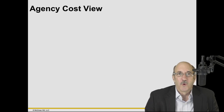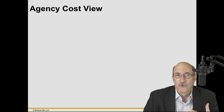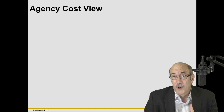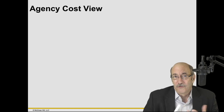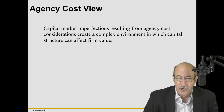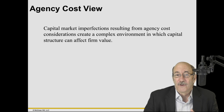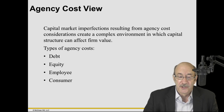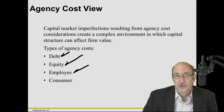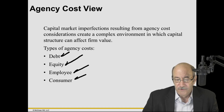Now we're going to look at some things that are more intangible — really more where the art piece of it comes in. The agency cost view of capital structure: capital market imperfections resulting from agency cost considerations create a complex environment in which capital structure can affect firm value. There are agency costs with debt, agency costs with equity, between employees and management, and between the firm and consumers — all of which could have an impact on firm value relative to leverage.